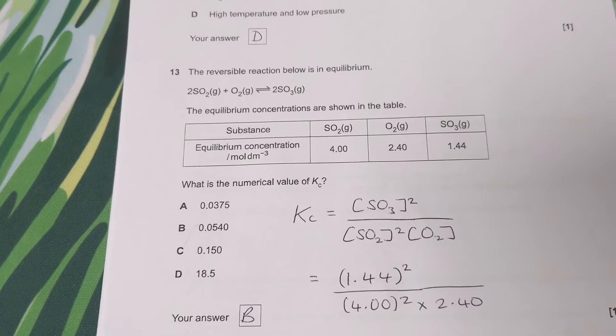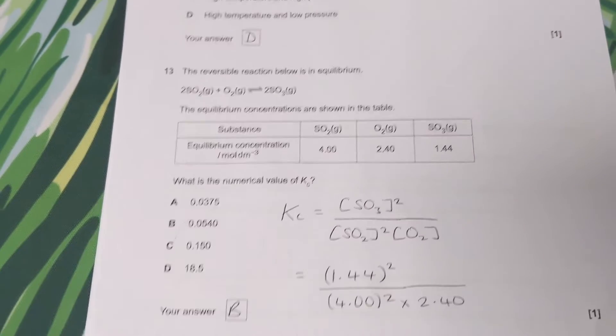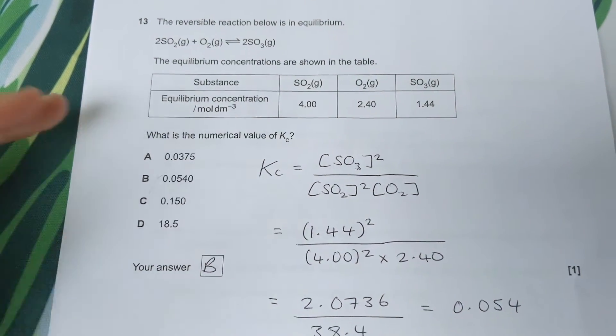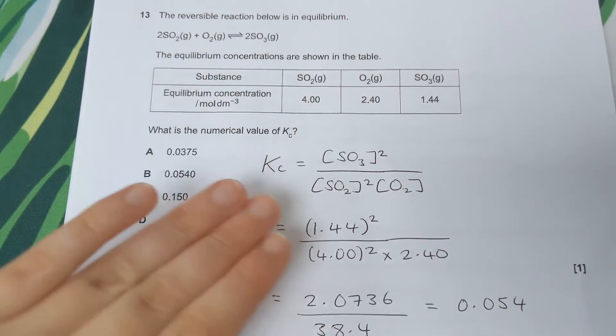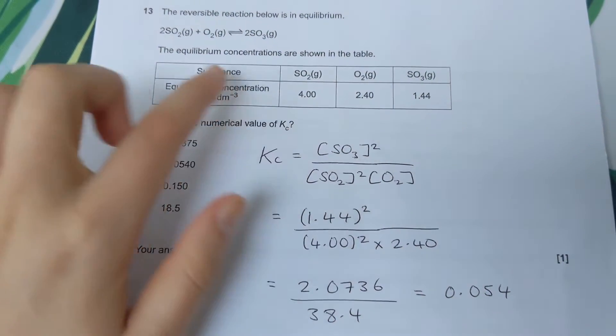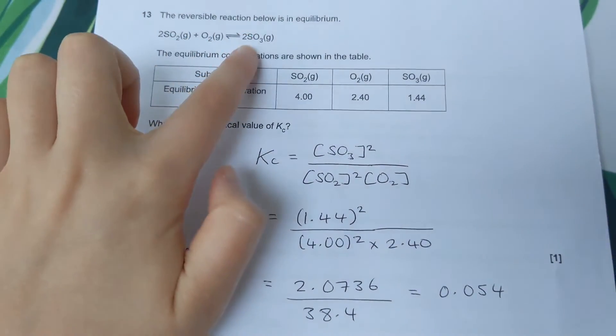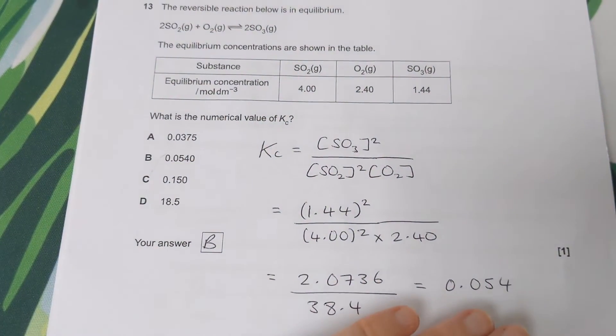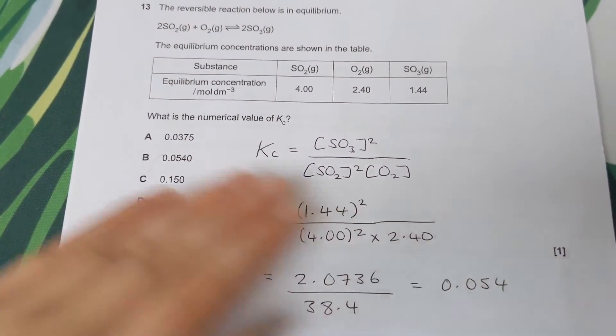Next question: the reaction below is in equilibrium. The equilibrium concentrations are shown below, and we have to calculate KC. In this case, we just write the equilibrium expression and plug in the numbers raised to the power of the number of moles. It's products over reactants again, and we should come out with 0.054, which is B.